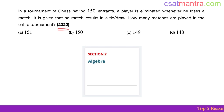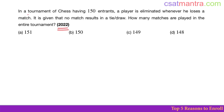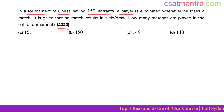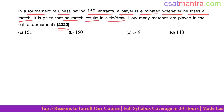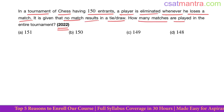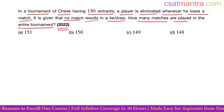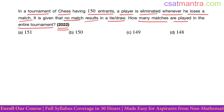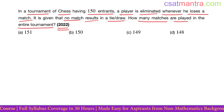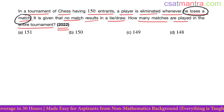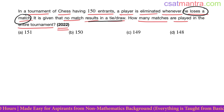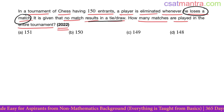2022 question based on algebra: in a tournament of chess having 150 entrants, a player is eliminated whenever he loses a match. It is given that no match results in a tie or draw. A chess game is played between two players, so this tournament has a final winner.